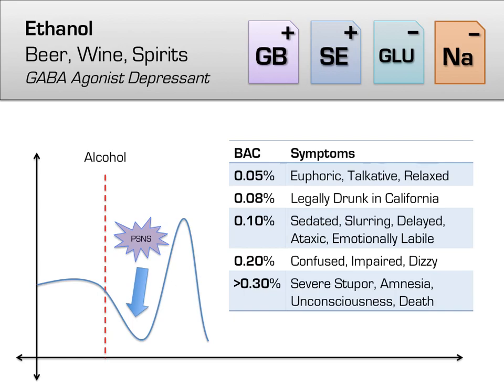Alcohol intoxication is graded by blood alcohol content. Initially, users will experience some mild euphoria and relaxation. As intoxication increases, the depressant effect of alcohol becomes clear, and users become increasingly sedated with slurred speech, delayed responses and reaction times, ataxic walking and movements, and emotional lability. With further intoxication, users become confused, disoriented, and experience the classic room spinning, with subsequent nausea and vomiting.